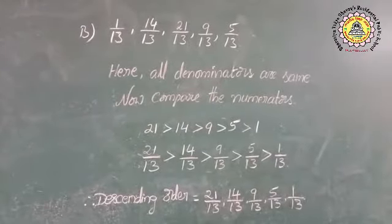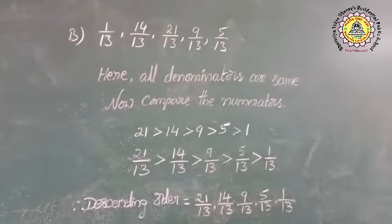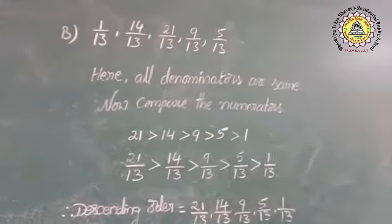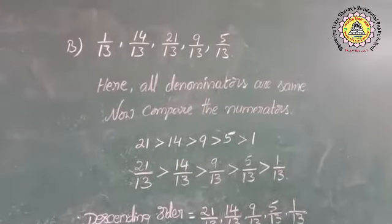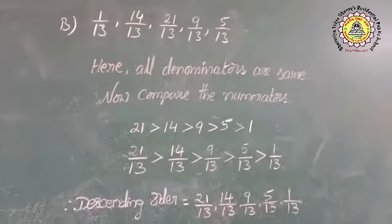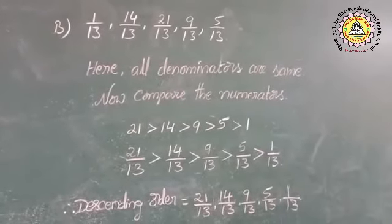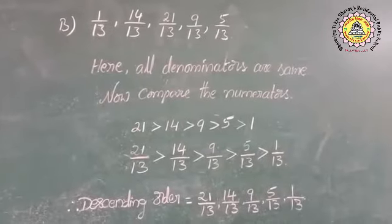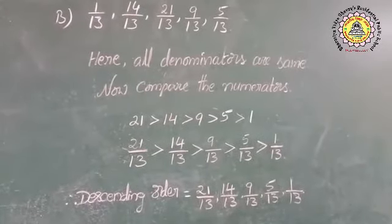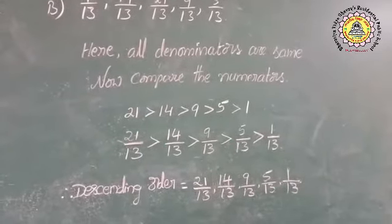Now, observe all the denominators of the given fractions — all denominators are 13, all are the same. Now compare the numerators. We are writing descending order, so we compare from biggest to smallest: 21 is greater than 14, is greater than 9, is greater than 5, is greater than 1. That is why, 21 by 13 is greater than 14 by 13 is greater than 9 by 13 is greater than 5 by 13 is greater than 1 by 13. Therefore, descending order equals: 21 by 13, 14 by 13, 9 by 13, 5 by 13, and 1 by 13.